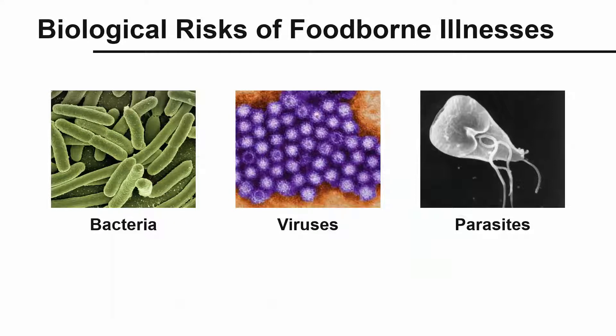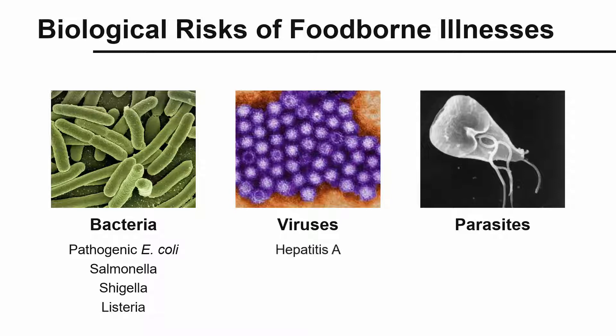Biological risks of foodborne illnesses are caused by microorganisms like bacteria — specifically pathogenic E. coli, salmonella, shigella, and listeria — viruses, specifically hepatitis A and norovirus, and parasites like giardia, cryptosporidium, and cyclospora. These organisms are very small, which makes it very important for us to know what can spread these organisms to our food.